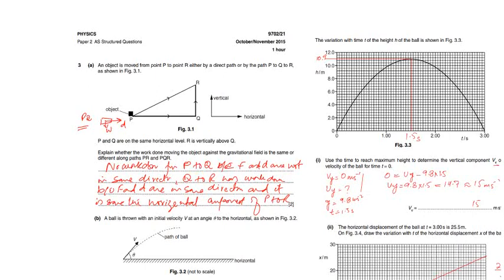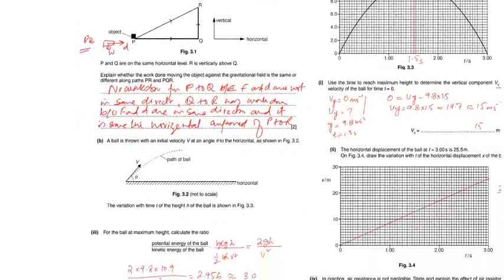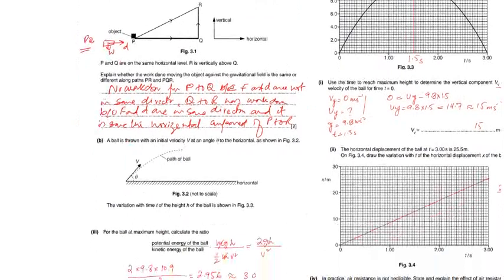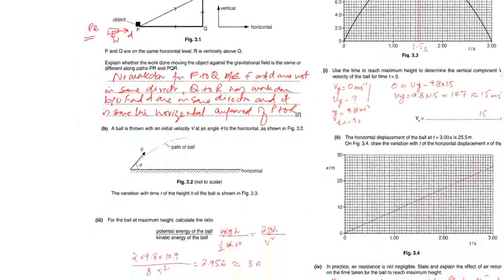Now part B. A ball is thrown with initial velocity V at an angle theta to the horizontal as shown. This is the horizontal and V is the initial velocity.